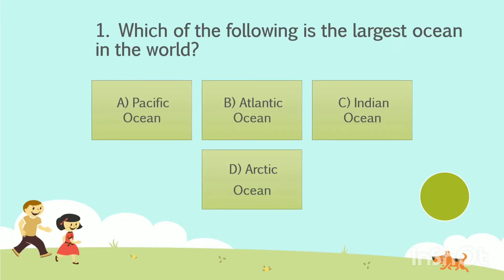Question number 1. Which of the following is the largest ocean in the world? Option A: Pacific Ocean. Option B: Atlantic Ocean. Option C: Indian Ocean. Option D: Arctic Ocean. Your time starts now. The answer is Option A, Pacific Ocean.